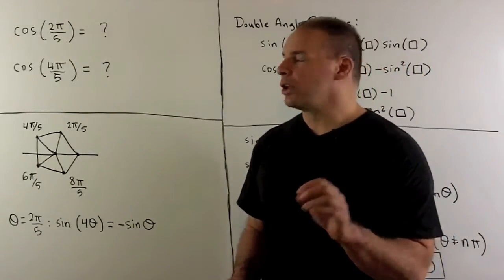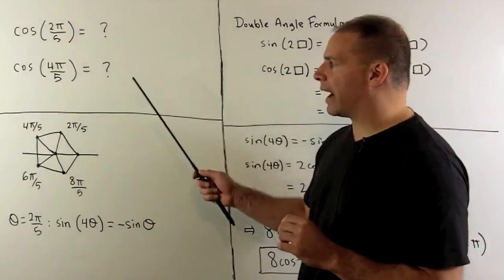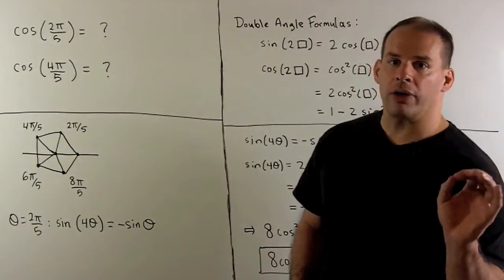The next angles on the list are multiples of π/5.